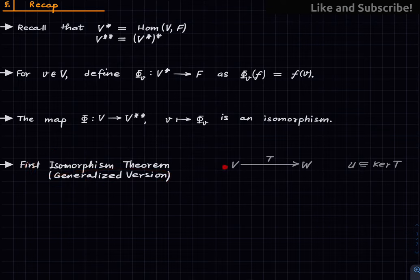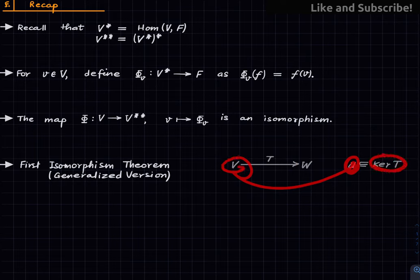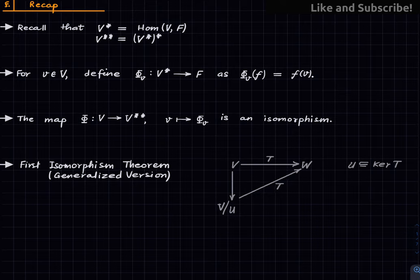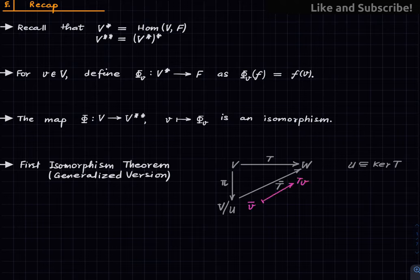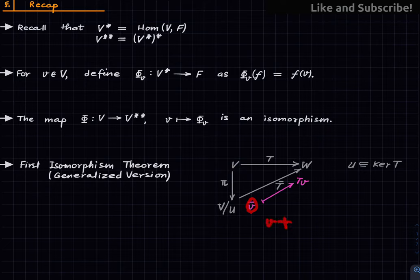The first isomorphism theorem says: if we have a linear map from a vector space V to a vector space W, and U is a subspace of V contained in the kernel of T, then this map factors through V mod U to give a map T-bar, where the vertical map is the natural projection. T-bar takes v-bar to T of v. When I write v-bar I mean the corresponding element of V mod U — v-bar is the coset v plus U.